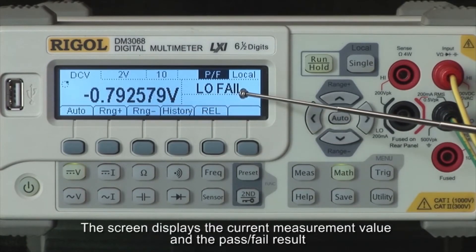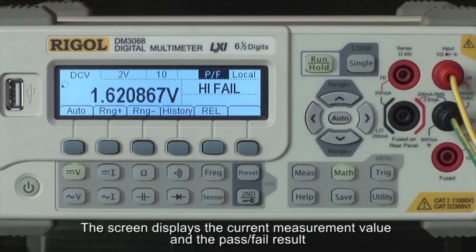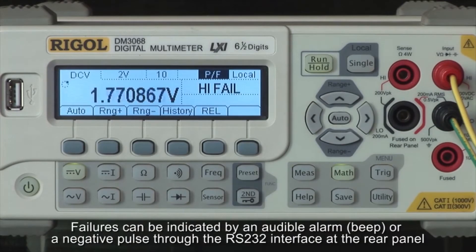The screen displays the current measurement value and the pass-fail result. Failures can be indicated by an audible alarm or beep, or a negative pulse through the RS-232 interface at the rear panel.